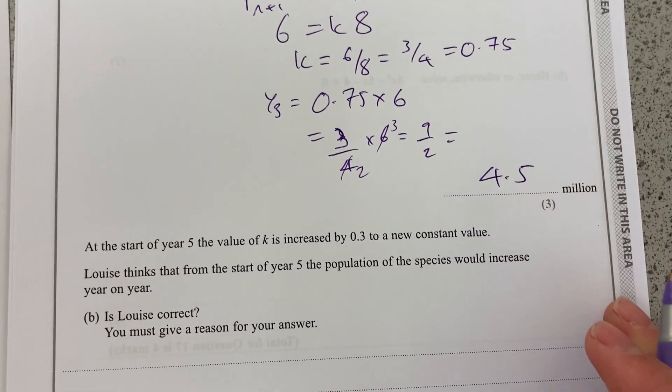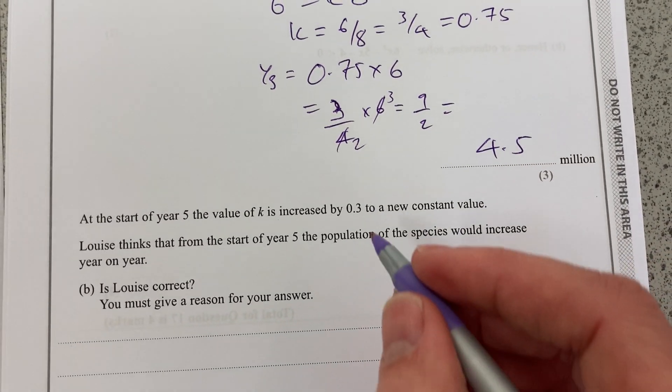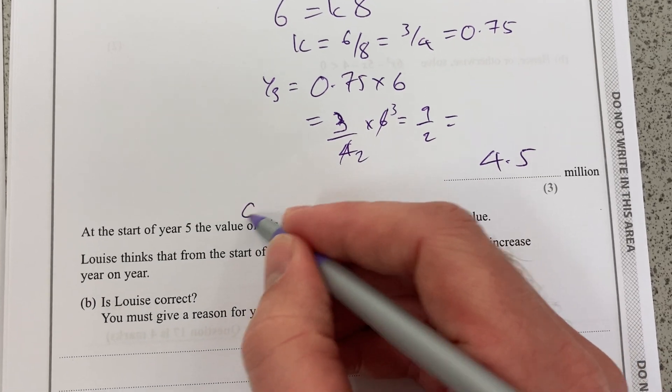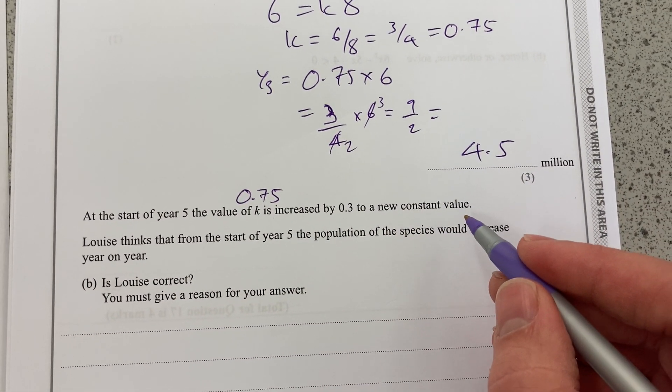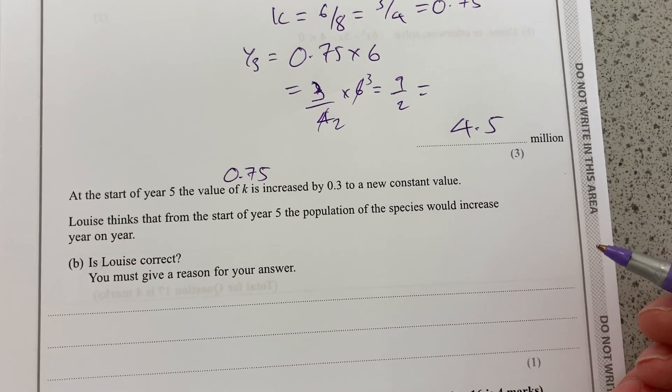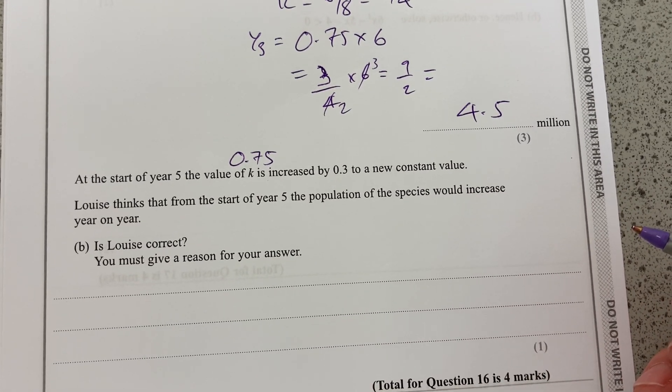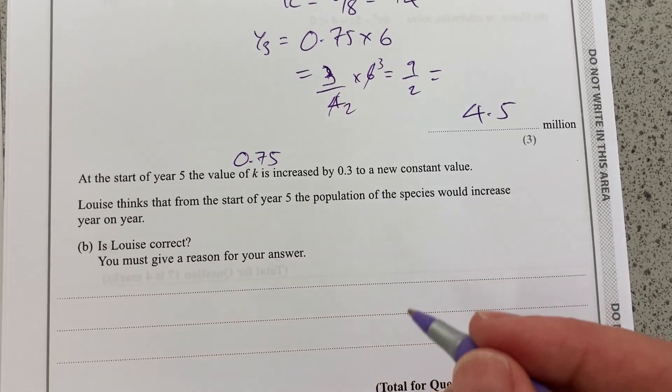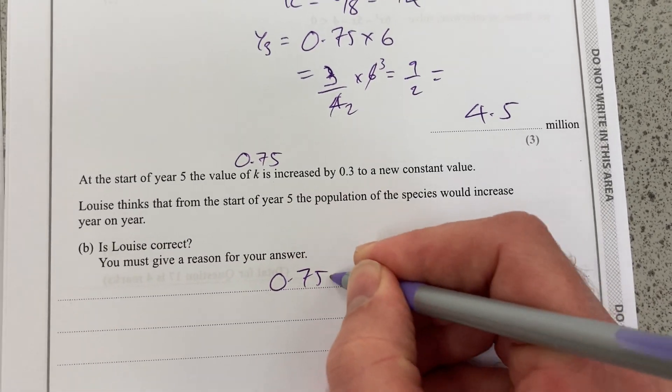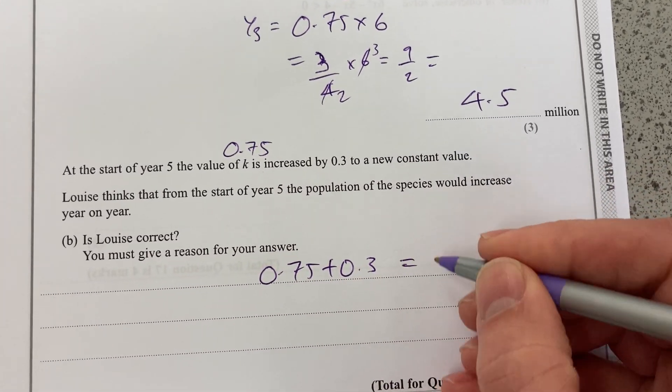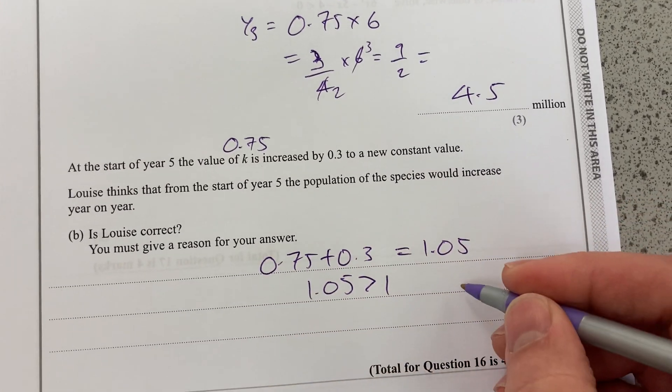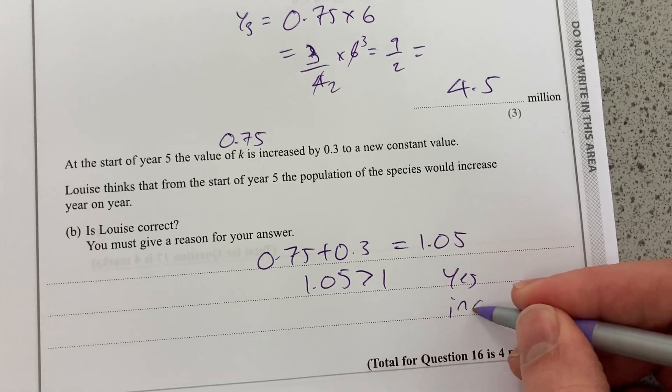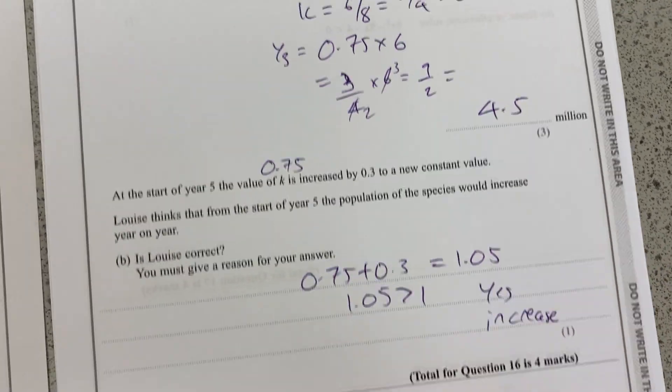At the start of year 5, the value of k is increased by 0.3. The value of k was 0.75. It's now increased by 0.3. So Louis thinks that from the start of year 5, the population would increase. Is Louis correct? Well, 0.75 plus 0.3 is 1.05. And as long as 1.05 is greater than 1, then yes, it will increase. That's question 16.